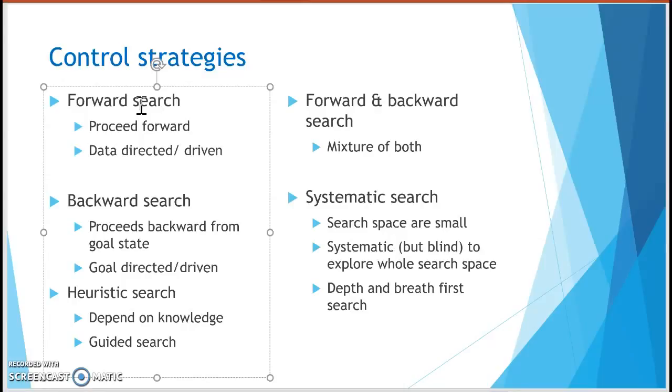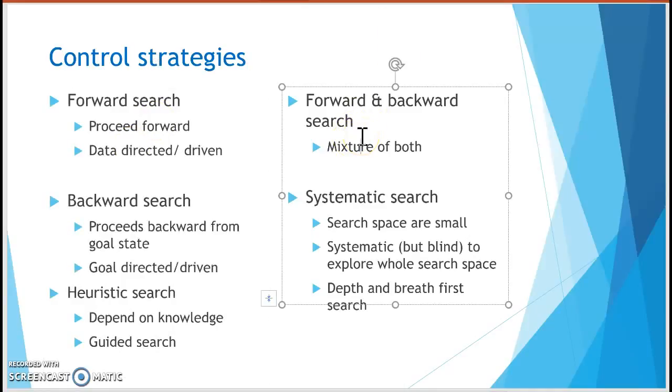So we have forward search, this is similar with our inference, forward chaining, backward chaining. Forward search basically proceeds forward, and this is data directed. Now your cat is already in A, what do we have next? We have two options, whether to B and D. So that is data directed, this is what we have. Backward search, you're already at the goal, you have to go backward. From the goal state, what are the options, nodes or tunnels that they can go. Heuristic search depends on knowledge and the guided search. This is like informed search or we have the - for example just now I gave, instead of cat with a bad nose, you put a cat with a good nose. So they can smell fish and they know which tunnel is nearer to the fish. You can also have a forward and backward search, there is a mixture of both. You can go next or you can backward, and also systematic search.